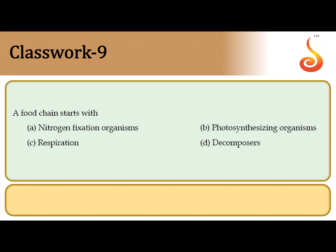The ninth question says: a food chain starts with... You all know that a food chain starts with organisms which capture radiant energy from the sun and convert it into organic matter. Obviously it has to be the producers, and producers are capable of photosynthesis. So it basically starts with photosynthesizing organisms. Please remember: photosynthesizing organisms always form the base of a food chain.